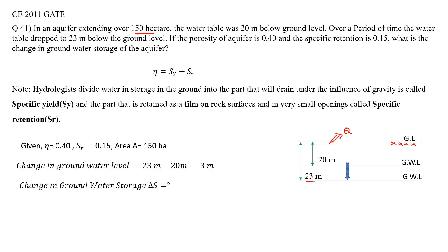They observed that the porosity of the aquifer is 0.4 and the specific retention is 0.15. They asked to calculate delta S, the change in the groundwater storage of the aquifer. This is the question, and similar type of questions appear in all previous year papers.